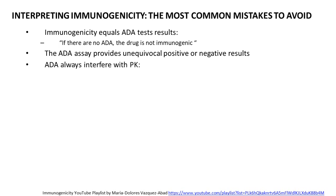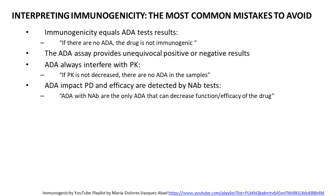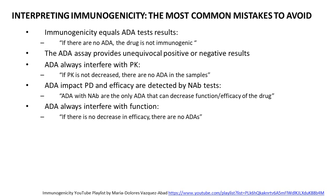Another mistake: anti-drug antibodies always interfere with PK. Or: if the PK is not decreased, there are no anti-drug antibodies in the samples — so why waste time checking for anti-drug antibodies if the PK is okay? Also: anti-drug antibodies impact pharmacodynamic and efficacy endpoints are detected by neutralizing antibody tests — meaning only anti-drug antibodies with neutralizing activity can decrease drug function or efficacy. And: anti-drug antibodies always interfere with function, or if there is no decrease in efficacy, there are no anti-drug antibodies.